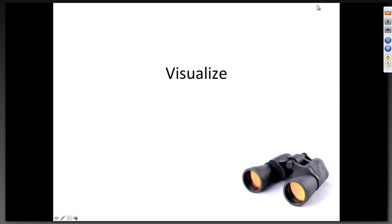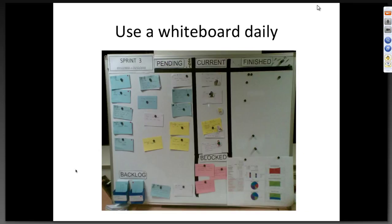Visualization — learn to see what you're doing. Be able to see the work that is in progress. If you can't see the work, you can't understand it. When you can see it, you can learn from it, and when you can learn from it you can change and adapt and think about what you can do to improve. Get yourself a whiteboard: work to do, work in progress, work finished. Start using it, start tracking your work through.